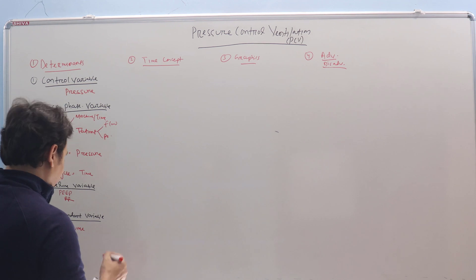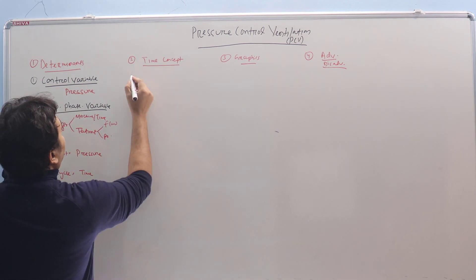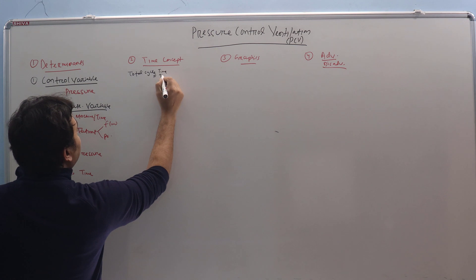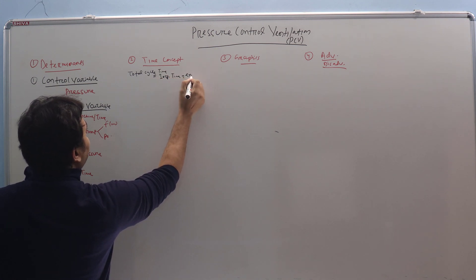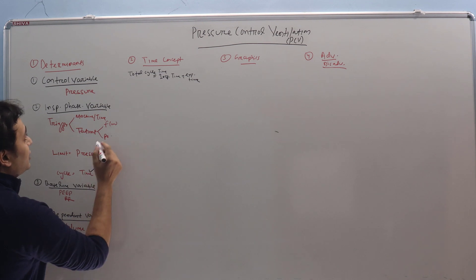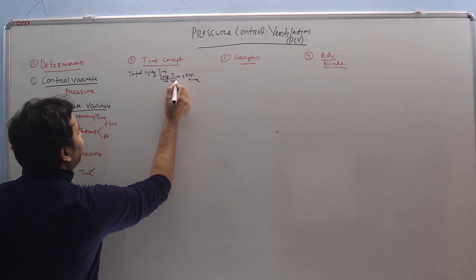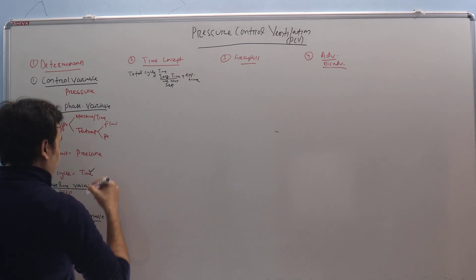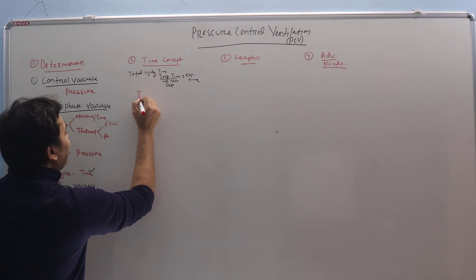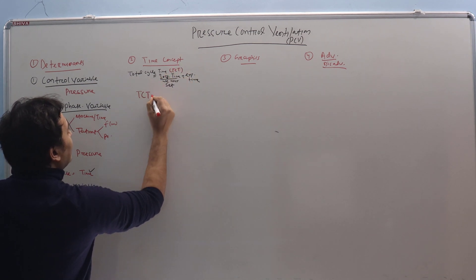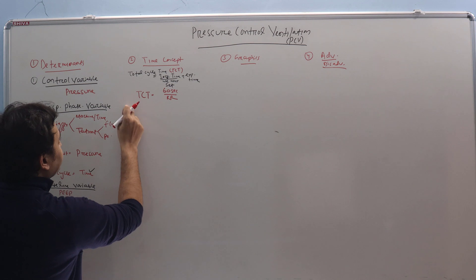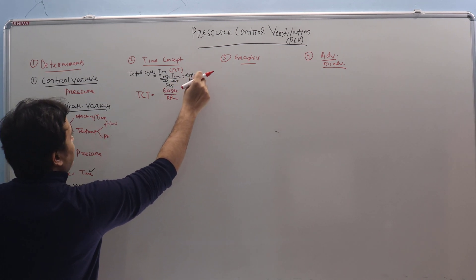Coming to the Time Concept: the total cycle time is equal to Inspiratory Time plus Expiratory Time. We have already selected the Inspiratory Time — it is constant. So if you want to increase the expiratory time, you just reduce the respiratory rate. Total cycle time is 60 seconds divided by respiratory rate. So if you decrease the total cycle time while Inspiratory Time is fixed, the I:E ratio will automatically change.